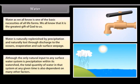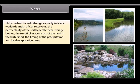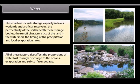Although the only natural input to any surface water system is precipitation within its watershed, the total quantity of water in that system at any given time is also dependent on many other factors. These include storage capacity in lakes, wetlands, and artificial reservoirs, the permeability of the soil beneath these storage bodies, the runoff characteristics of the land in the watershed, the timing of the precipitation, and local evaporation rates.